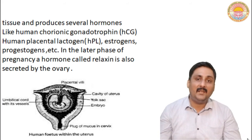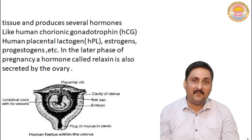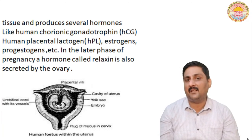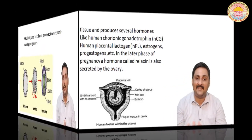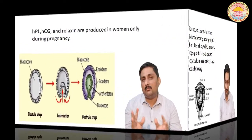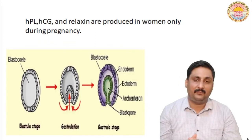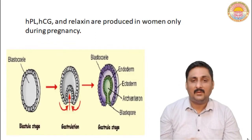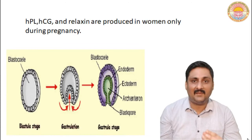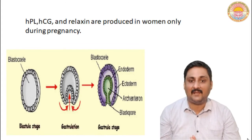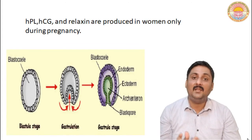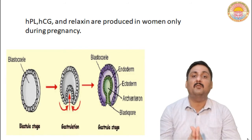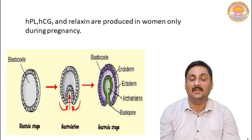Moreover, in the later phase of pregnancy, another kind of hormone is secreted which is called relaxin. Three kinds of hormones — human chorionic gonadotrophin, human placental lactogen, and relaxin — are only secreted at the time of pregnancy.